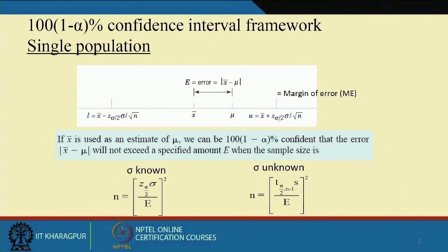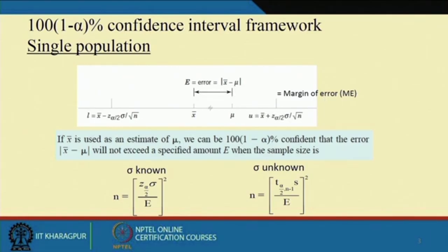This plus/minus z(alpha/2) * sigma/sqrt(n) — the distance from x-bar to U as well as from x-bar to L — is known as the margin of error. Now, what we assume is that mu lies in between this interval with a confidence of 100*(1 - alpha) percent. We do not know the exact distance between x-bar and mu. So, the permissible error is E = |x-bar - mu|. We should calculate n such that this error lies within the margin of error — that is, the maximum error quantity will be ME.